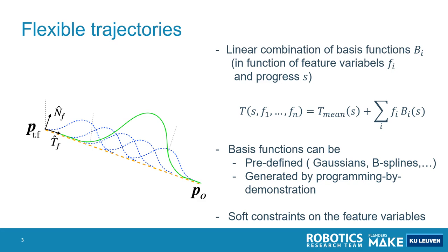Such that nominally, the trajectory is still the mean trajectory, and only when there are disturbances, we start to deviate.